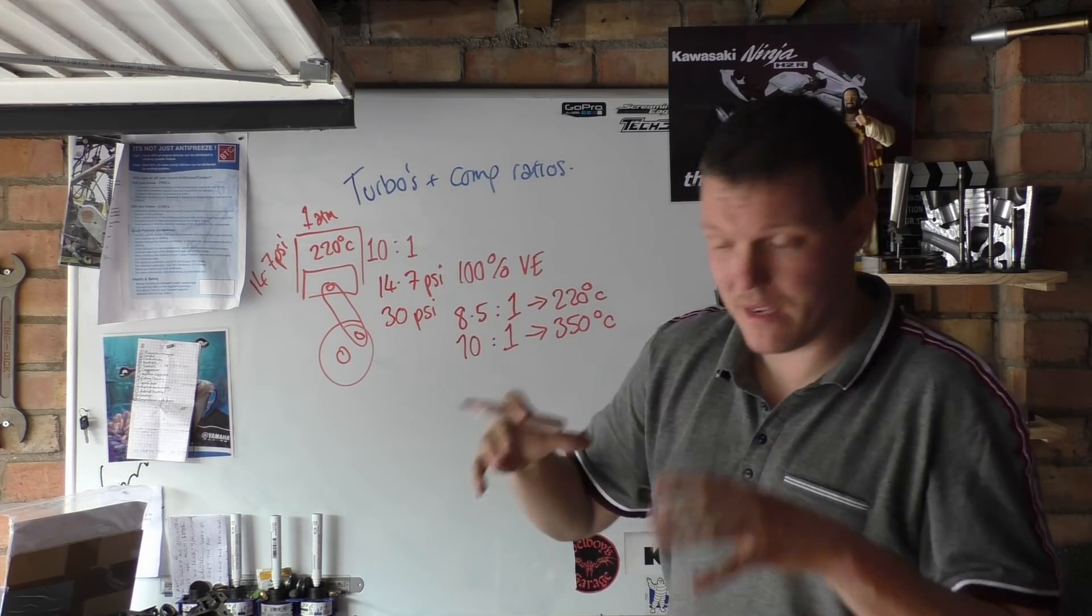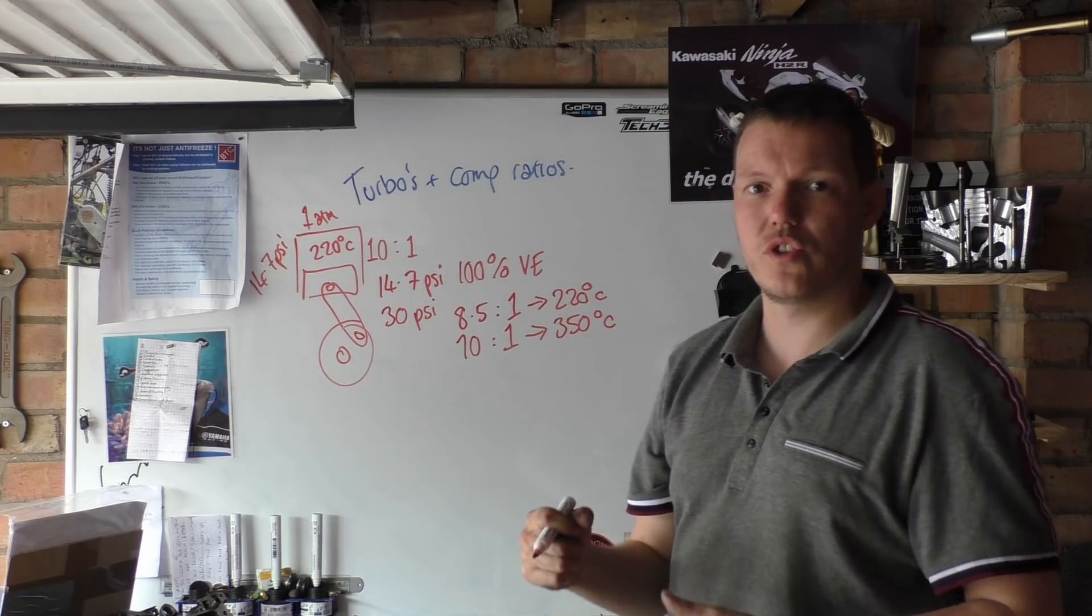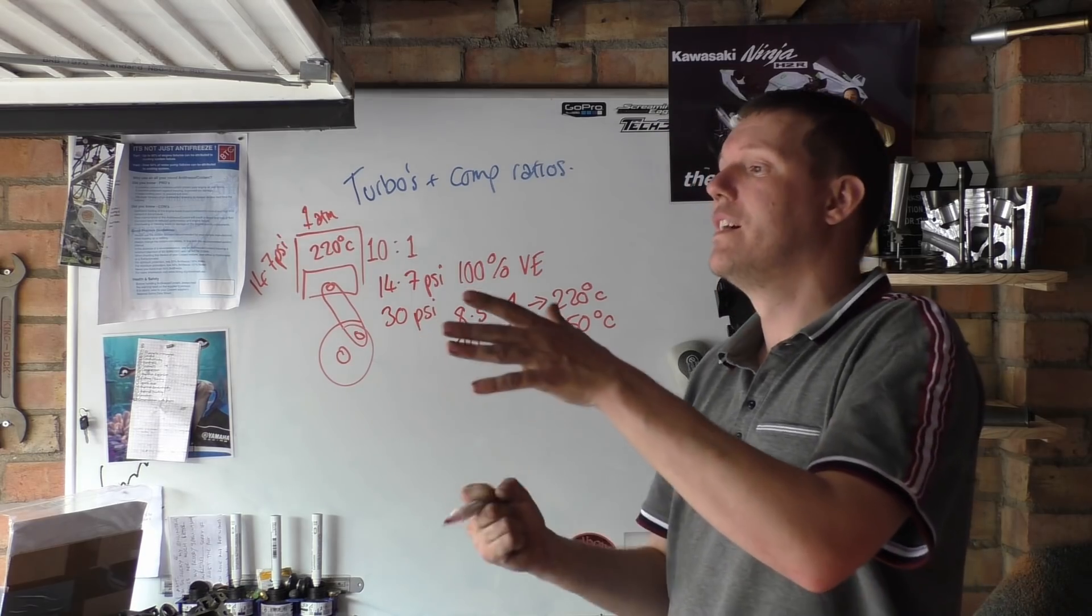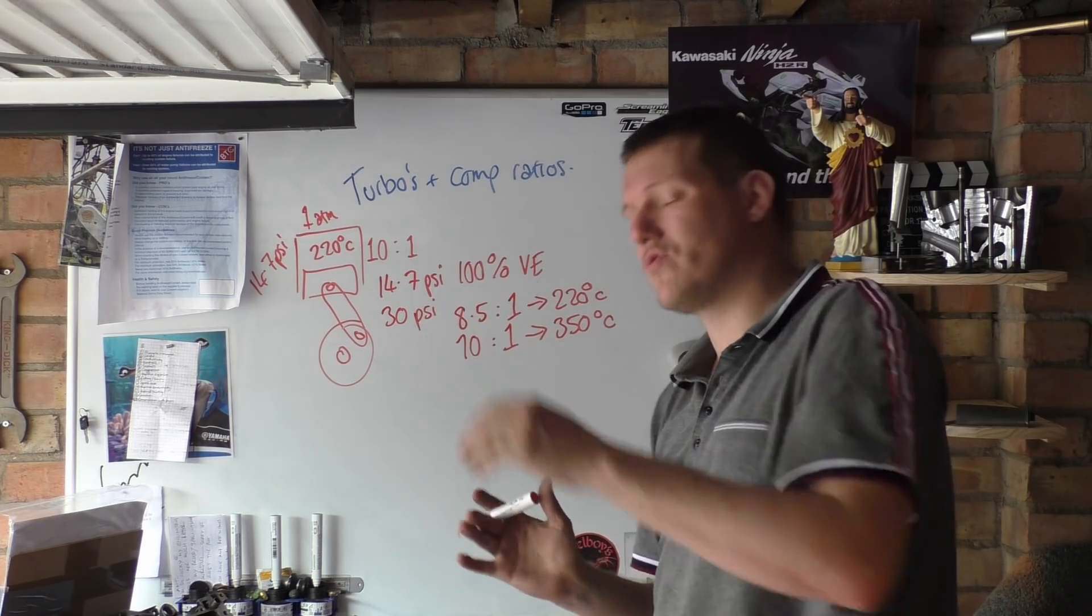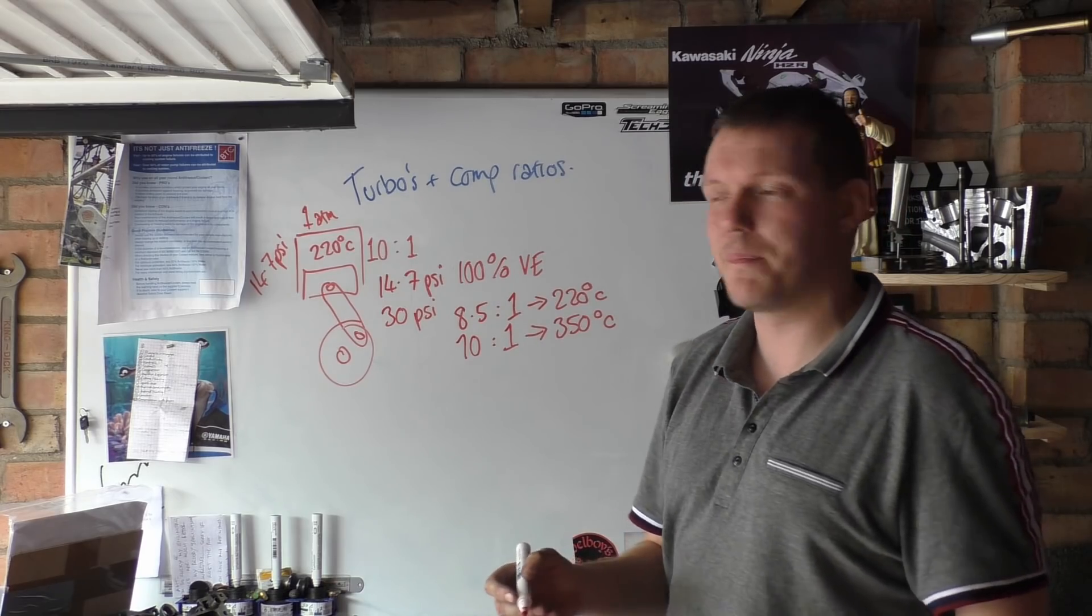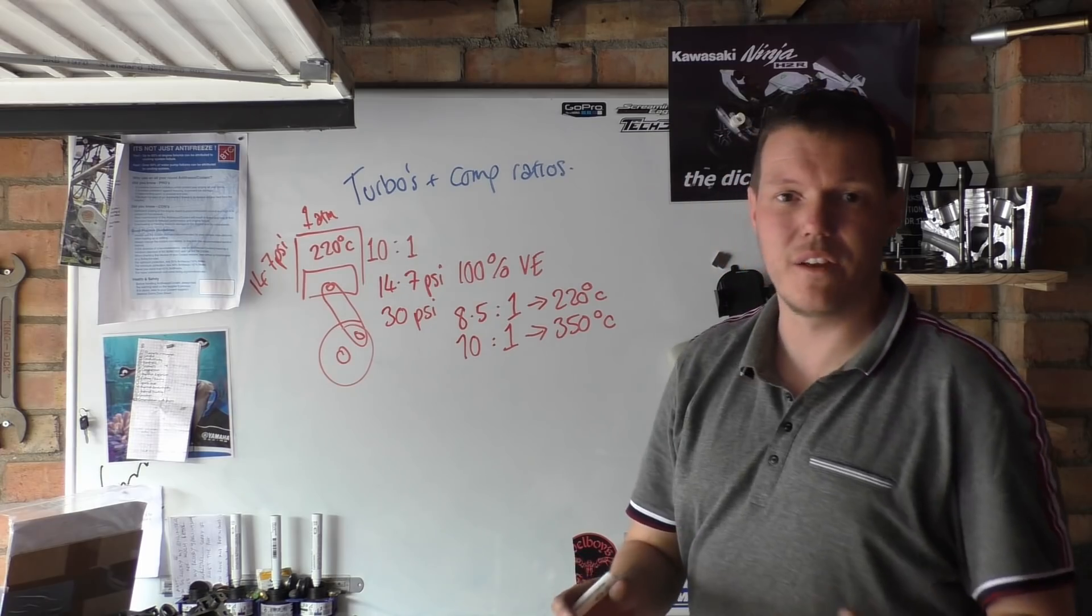Now you've got the added stress of your piston getting a hammering from above and your conrod, wrist pin, and crankshaft under so much stress. Generally what happens is the conrod goes through the piston because the piston is now getting hotter and hotter with all this compressive strength. It's going to push through - you end up losing a piston, the rod goes through it, and it's all sayonara.